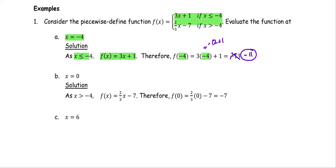For the second case, when x equals 0, x equals 0 is greater than negative 4, so we go with the second option. The function will be defined as 2 over 3 times x minus 7. When you plug in x equals 0, we get the value of negative 7.